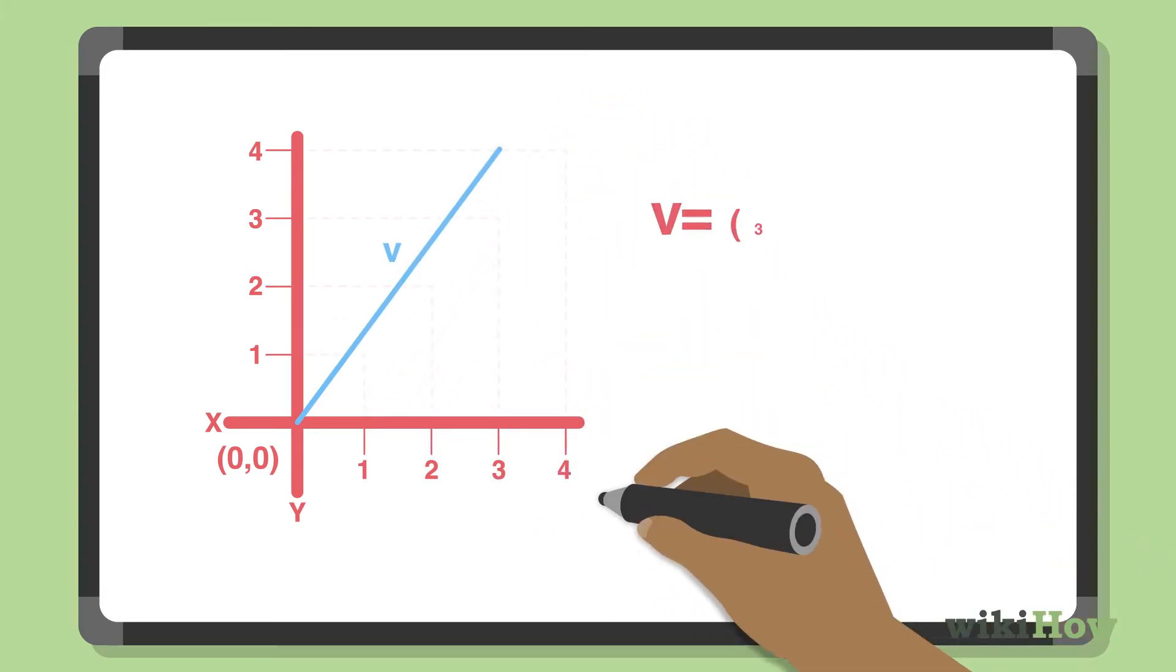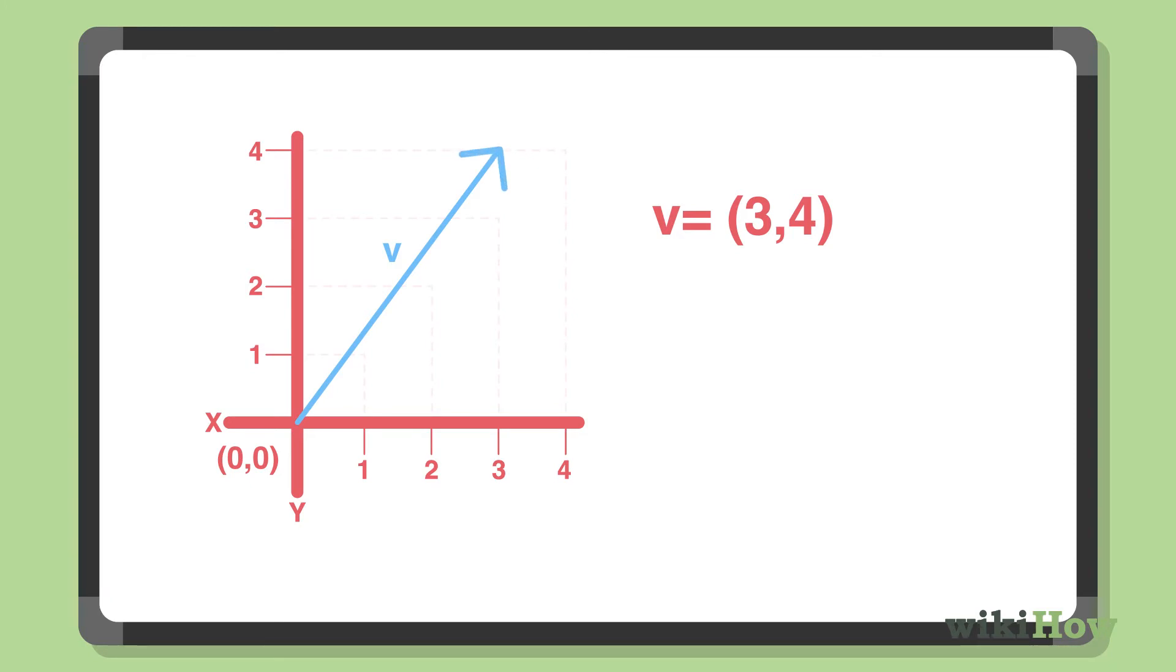This vector moves up from left to right. From there, you can determine that your unit vector will have the same starting point and direction as the original vector. You also know that the length of your unit vector is 1.